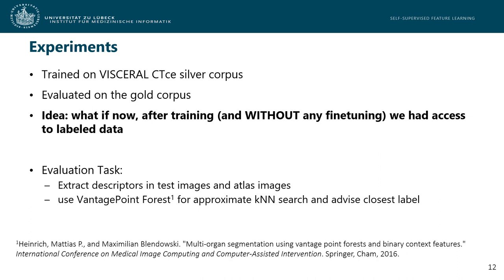Now we have to evaluate the expressiveness of our learned descriptors. We train our CNNs on the contrast-enhanced Visceral CT silver corpus data and evaluate on the gold corpus data with ground truth annotations provided by medical experts. Because we don't want to obscure our findings by fine-tuning to other tasks — where you would not be able to separate contributions of pre-training from fine-tuning — we fixed our pre-trained CNNs and held their weights static. The only assumption is that after training we have access to labelled image data, allowing us to extract descriptors from unseen test images. We also extract descriptors from atlas images and perform an approximate k-nearest neighbor search using our vantage point forest approach. Having found the closest descriptor matches, we transfer the label from the atlas image at that position to the unseen test image.